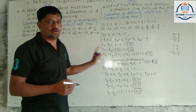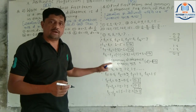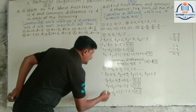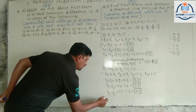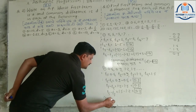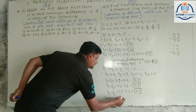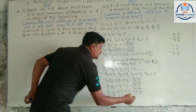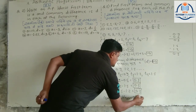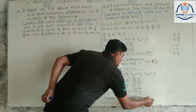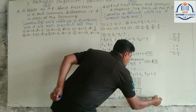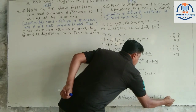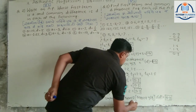The differences are all 0.3, so the common difference is 0.3. The common difference is equal to 0.3.